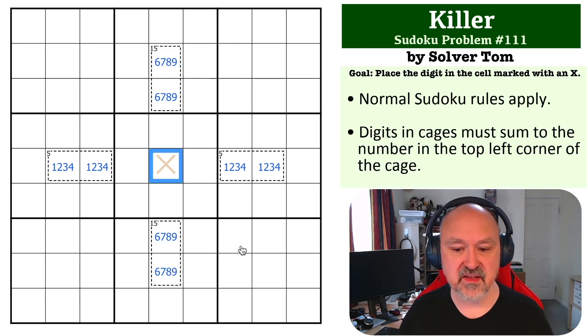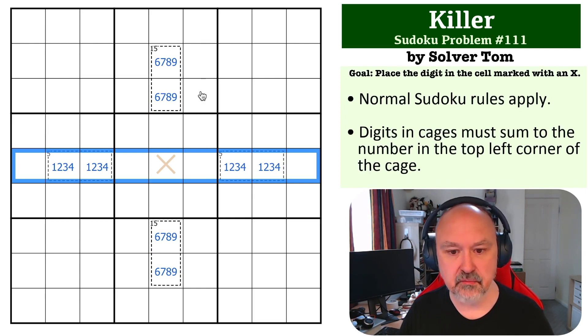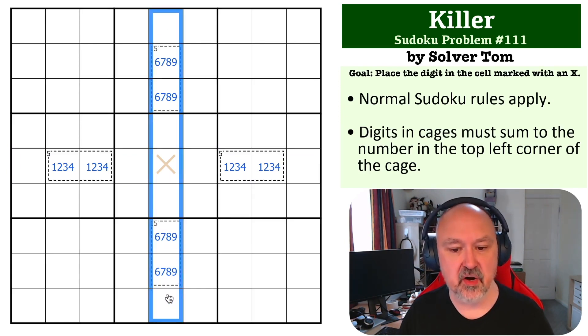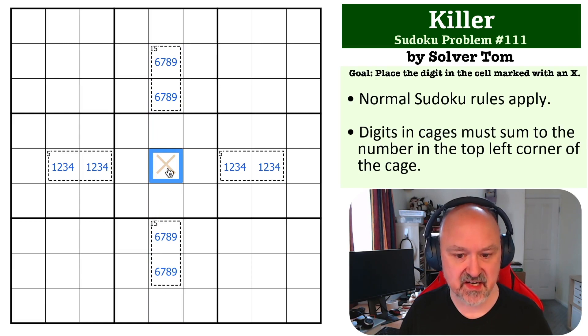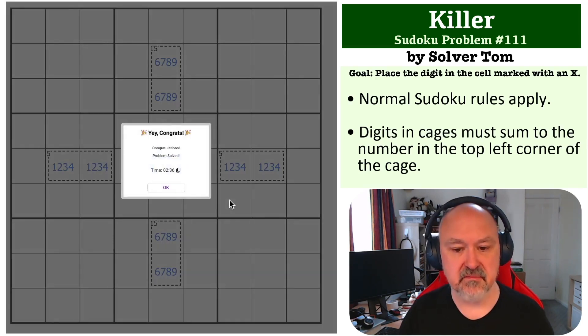Now, if we look at this central cell, we can see that it can't be 1, 2, 3, or 4 because those are taken up in the row. And it can't be 6, 7, 8, or 9 because those are taken up in the column. So the central cell must be 5.